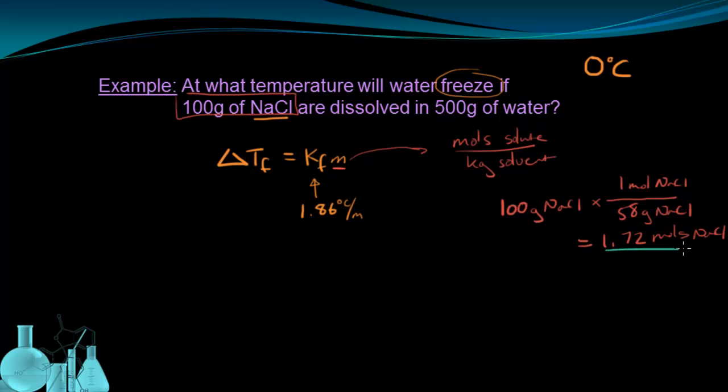So that's really helpful that I have moles now. I can now plug that in over here. 1.72 moles over kilograms of solvent. Well, I have 500 grams, so that's half of a kilogram. So I have 0.5 kilograms of water as my solvent. Solving this expression tells me that I have a 3.44 molal solution of sodium chloride.